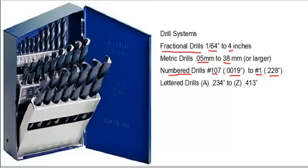After that we go to letter drills, and this is the fourth system of drill bits that we use. They work from A being small to Z being larger. A size drill is 0.234 inches, again just slightly smaller than a quarter inch. And they go up to Z which is 0.413 inches, which is just slightly smaller than 7/16ths of an inch.